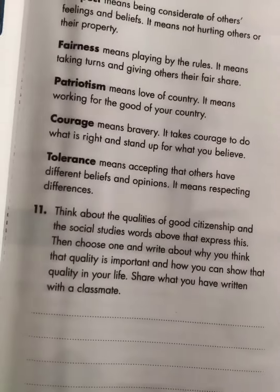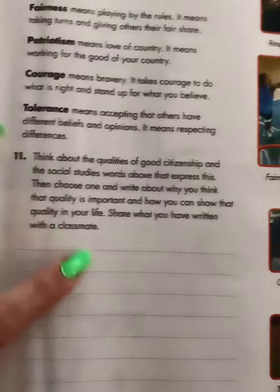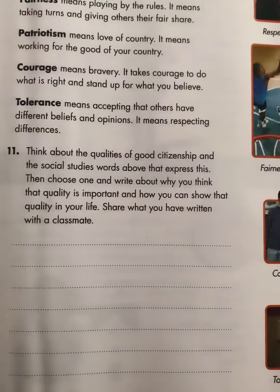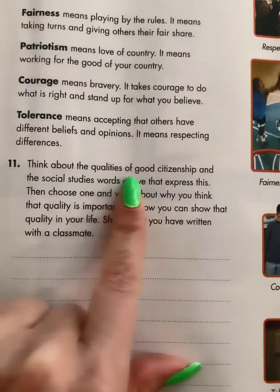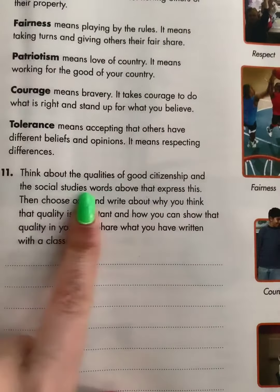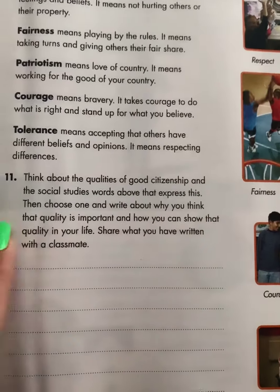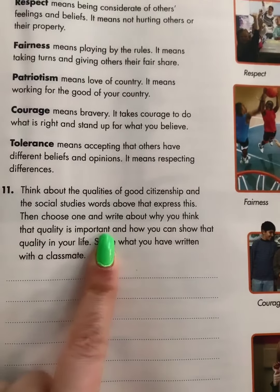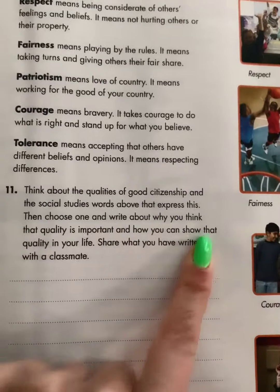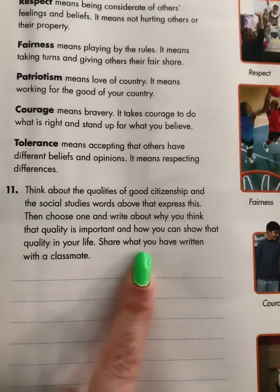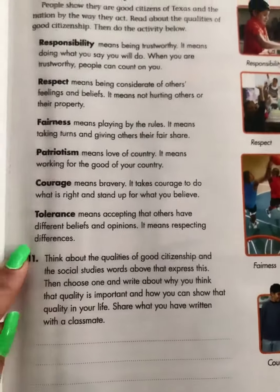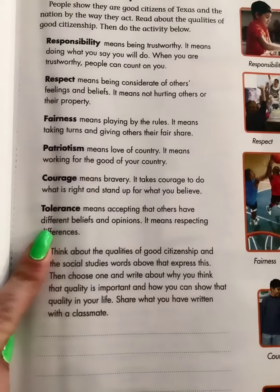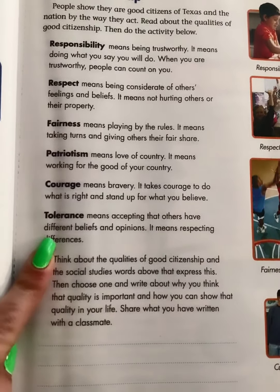So your assignment in the Google form is to think about the qualities of good citizenship and the social studies words above that express this. Then choose one and write about why you think that quality is important and how you can show that quality in your life. In the Google form, you're going to have a dropdown and you're going to pick the one you think is most important. And then in the next Google question, you're going to explain why.